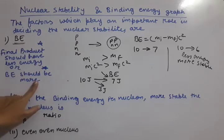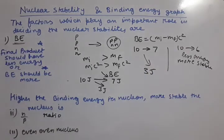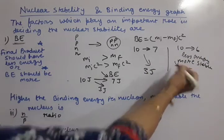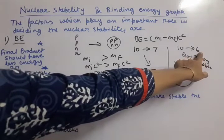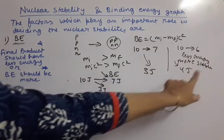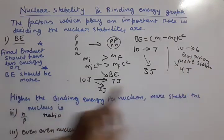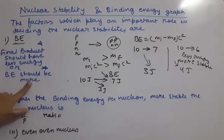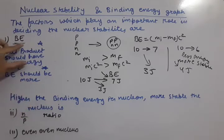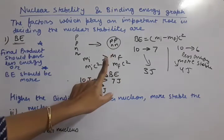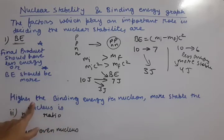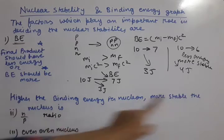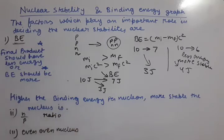Now in terms of binding energy: in the first case, 10 minus 7 gives 3 joules released; in the second case, 10 minus 6 gives 4 joules released. But the second case is more stable. That means the more binding energy released, the less the final product energy, and hence the more stable it will be. So binding energy should be more for more stability. Higher the binding energy per nucleon, more stable the nucleus is.